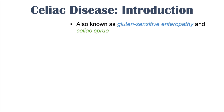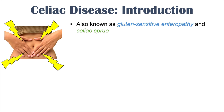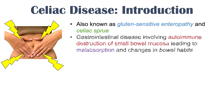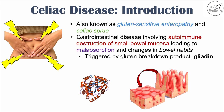What is celiac disease? Celiac disease is also known as gluten-sensitive enteropathy and celiac sprue. It is a gastrointestinal disease involving autoimmune destruction of small bowel mucosa, leading to malabsorption and changes in bowel habits. It is an autoimmune condition triggered by the gluten breakdown product gliadin.